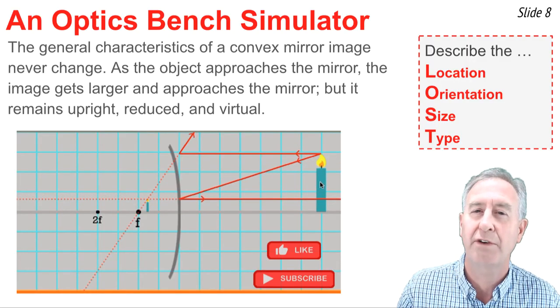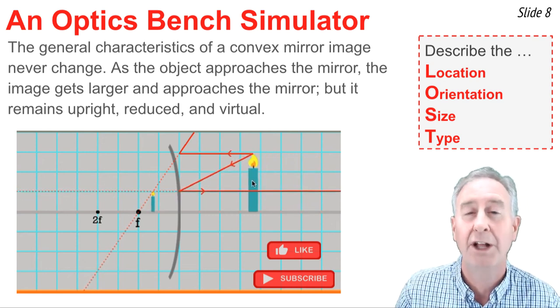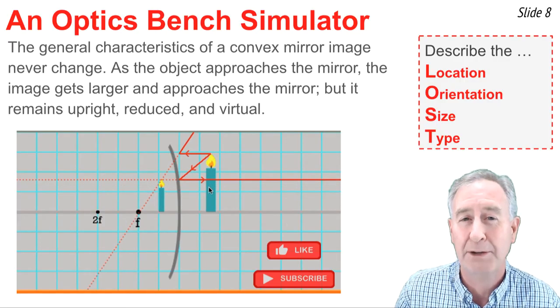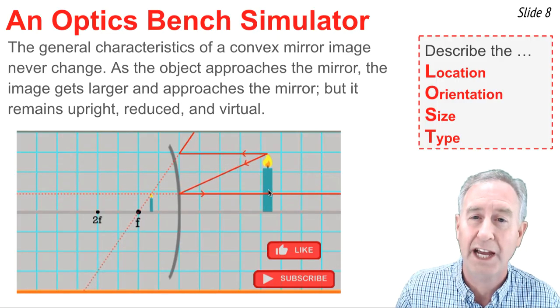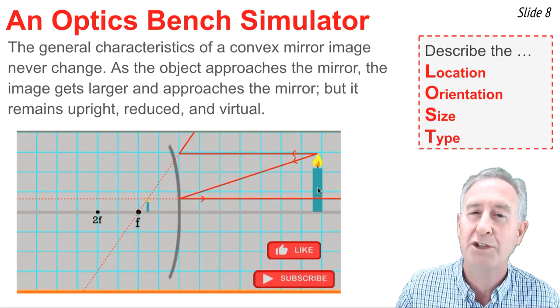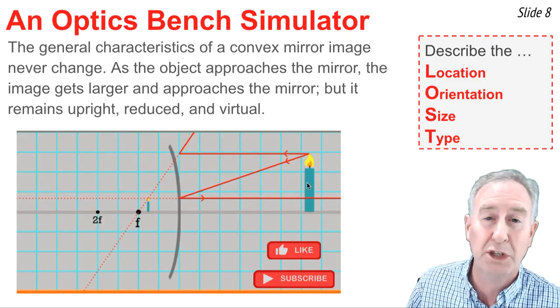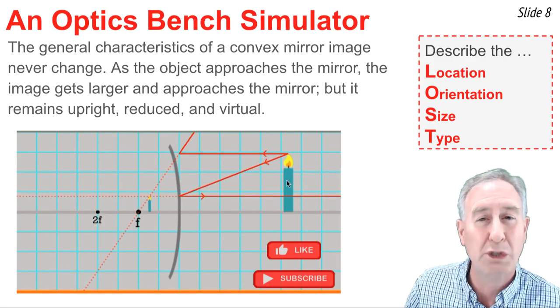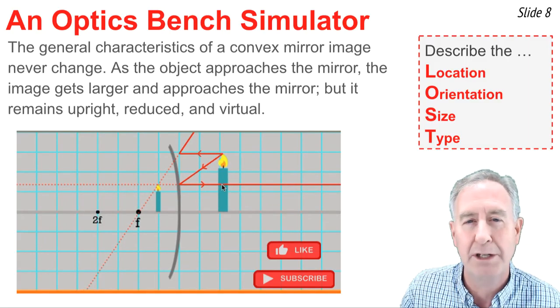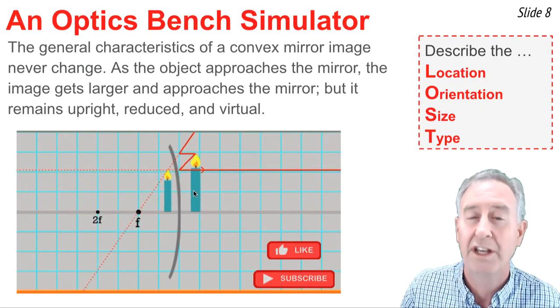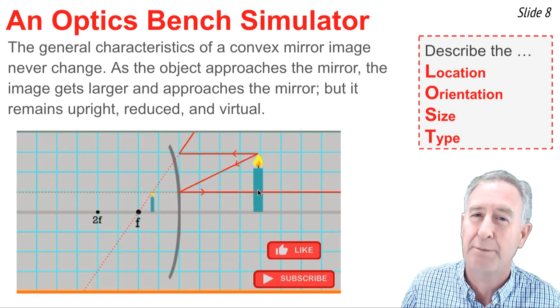What you notice is that for all instances, the location of the image is on the opposite side of the mirror, located between the focal point and the mirror surface. You'll also note that it's always an upright image, and its size relative to the object is always reduced. As the object gets closer to the mirror, the image gets larger, but it always is smaller than the object itself, thus reduced in size. And the type of the image for all object locations is a virtual type image, because the reflected light rays are diverging upon reflection.